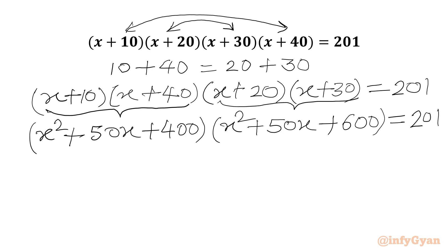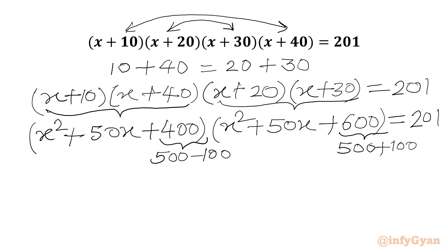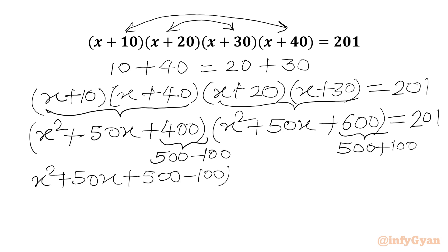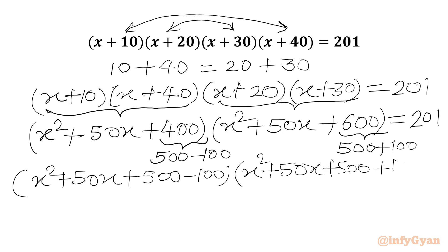Now we are going to split 400 and 600. We write 400 as 500 minus 100, and 600 as 500 plus 100. So we can write the first bracket as x squared plus 50x plus 500 minus 100, and the second bracket as x squared plus 50x plus 500 plus 100, equal to 201.